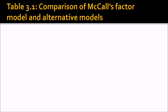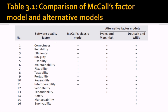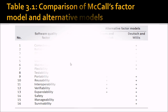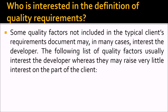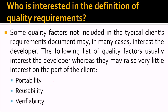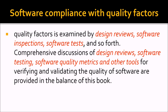Comparing McCall's factor model with alternative models, some quality factors not included in the typical client's required model may interest the developer. A list of quality factors usually interests the developer while generating little interest on the client's part — such as portability, usability, and verifiability. Software compliance with quality factors is examined through design reviews, software inspections, software tests, and other tools for verifying and validating software quality.